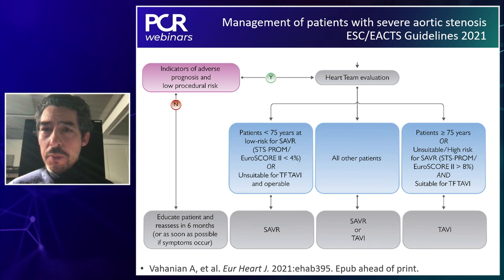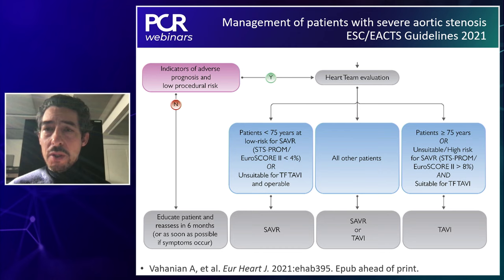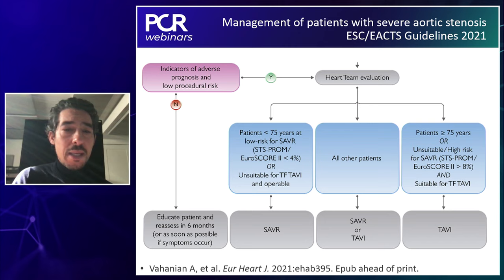What Jérôme highlighted is in the blue boxes stratifying age and risk. Patients less than 75 with an STS less than 4% and unsuitable for transfemoral TAVI go for SAVR. On the opposite end, patients greater than 75 or unsuitable and high risk for SAVR with STS greater than 8% and suitable for transfemoral TAVI go for TAVI. All other patients in the middle must be discussed in the setting of a heart team. Sabine, how does this particular patient fit within these guidelines?